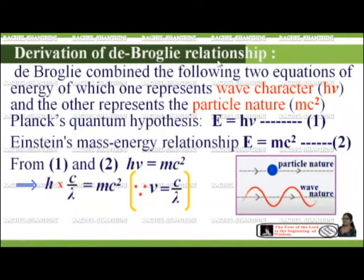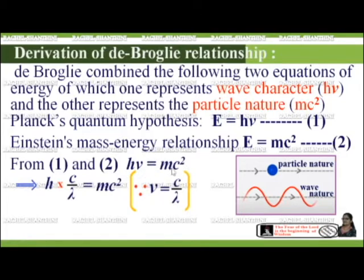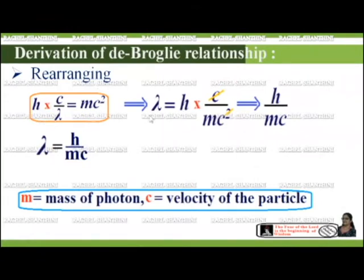Derivation of de Broglie relationship. De Broglie combined two equations of energy given by Planck's quantum hypothesis and Einstein's mass-energy relationship, one representing wave character and the other particle nature. From these two equations, we can write h·ν = mc². Since ν = c/λ, we can substitute to get h·(c/λ) = mc². Rearranging, we get λ = h·c / mc², and cancelling one c gives λ = h/mc, where m is the mass of the photon and c is the velocity.